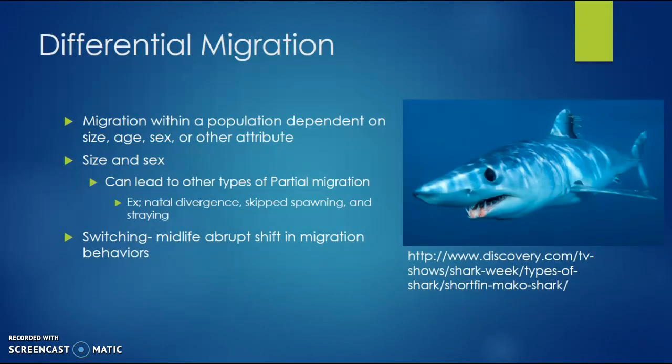Differential migration is migration within a population dependent on size, age, sex, or other attributes. Size and sex can lead to other types of partial migration, for example natal divergent, skip spawning, and straying.